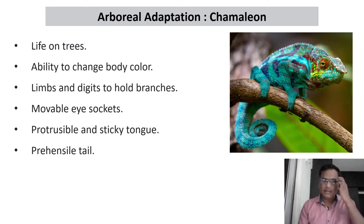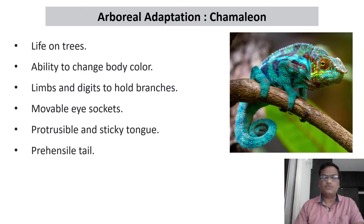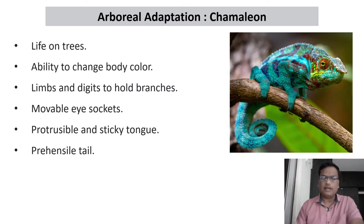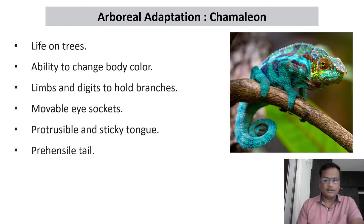The chameleon's limbs and digits are designed in such a way that they can hold the branch very firmly. Remember, almost all arboreal animals have very sharp claws on their digits because the claws help the animal to hold the branches firmly. In the case of this particular chameleon, the eye socket is movable — it can move each eye independently, like any other animal it has two eyes.